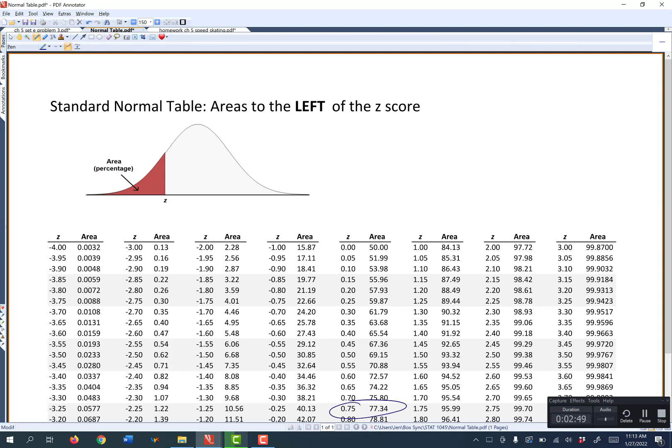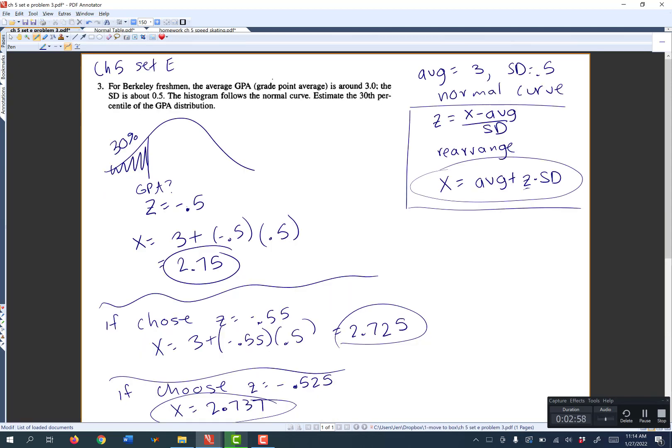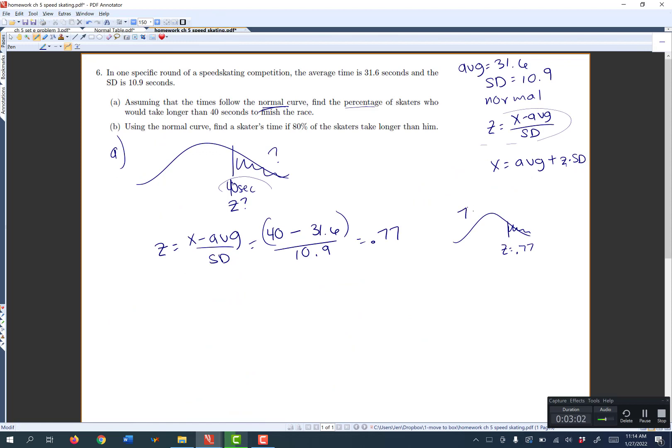It looks like my closest value would be this 0.75 for z. So the area to the left is going to be 77.34%. So this area is 77.34%. Now this is pure coincidence that that area is very close to the actual z value. Just coincidence. Ignore that.